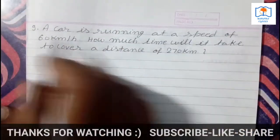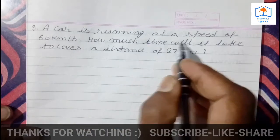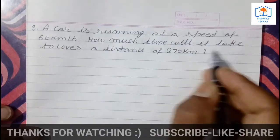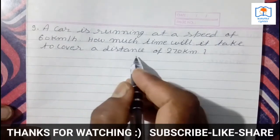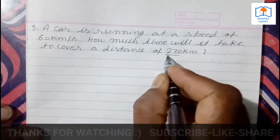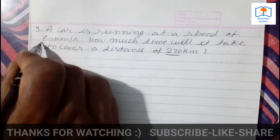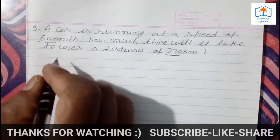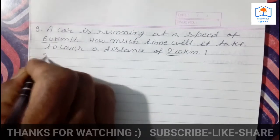You must try to write in your copy. A car is running at a speed of 60 km per hour. How much time will it take to cover a distance of 270 km? Distance is given, speed is given. We will find time. Children, first of all, you write the given data.